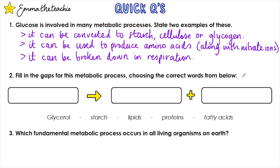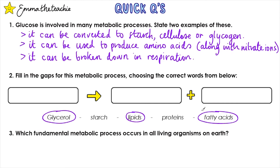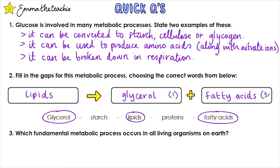Question 2: Fill in the gaps for this metabolic process, choosing the correct words from below. The three words that go together are lipids, glycerol, and fatty acids. Lipids break down into glycerol and fatty acids — and that can be in either order.